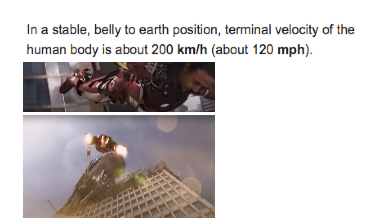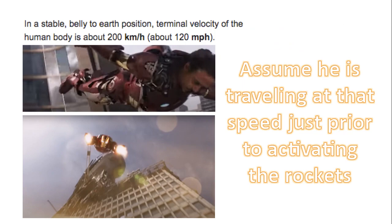Now, according to the internet, in a stable belly to earth position, terminal velocity of the human body is around 200 kilometers an hour, or 120 miles per hour. We will assume that he is traveling at that speed just prior to activating the rockets.